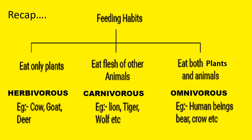Shall we see a small recap about the previous concepts? Based upon the feeding habits of animals, we can classify the animals into Herbivores, Carnivores, and Omnivores. Animals which eat only plants are called Herbivores. For example, cow, goat, deer, etc.